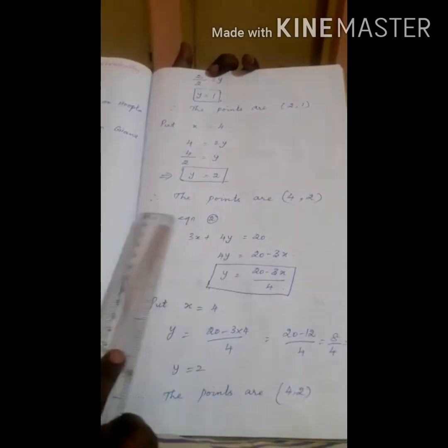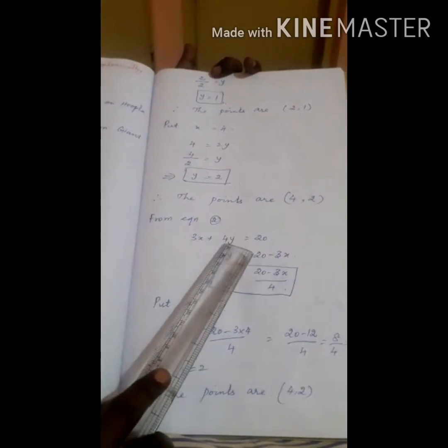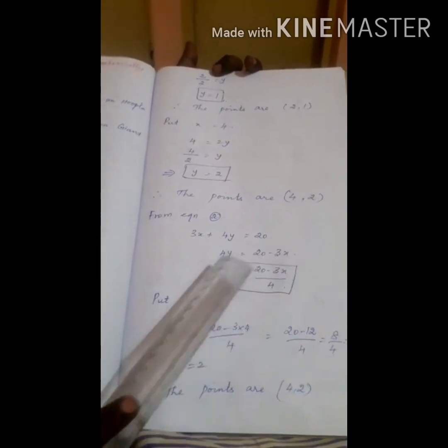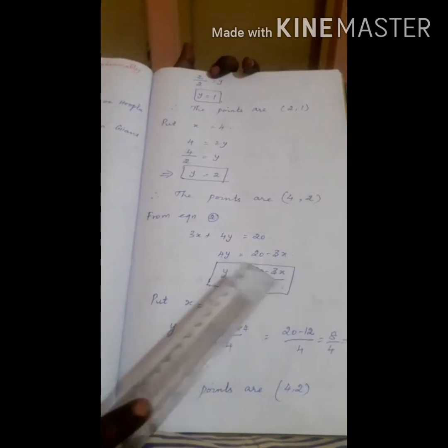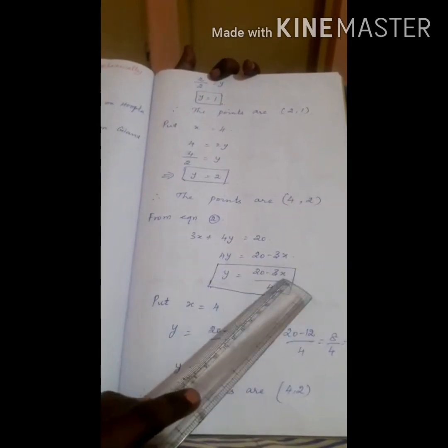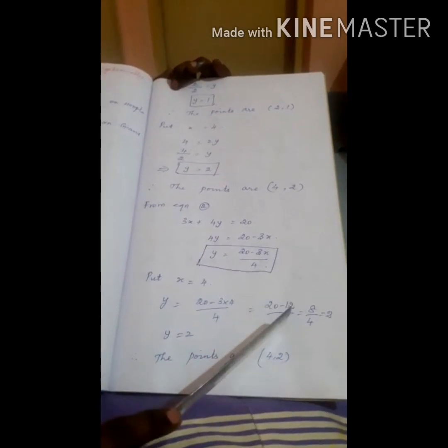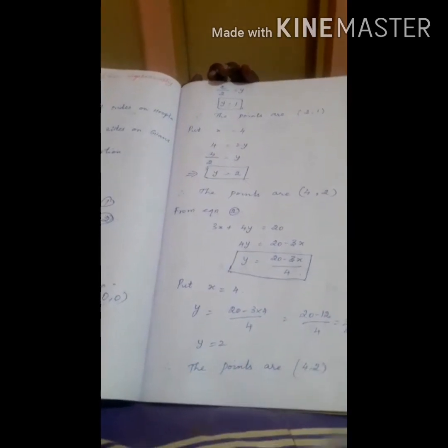Now taking Equation 2: 3x plus 4y is equal to 20. Rearranging, 4y equals 20 minus 3x, so y is equal to (20 minus 3x) divided by 4. Put x equal to 4: y equals (20 minus 12) divided by 4, which is 8 by 4, equal to 2. Therefore y is equal to 2, and the points are (4, 2). Put x equal to 0: y equals 20 by 4, equal to 5. Therefore y is equal to 5 and the points are (0, 5).